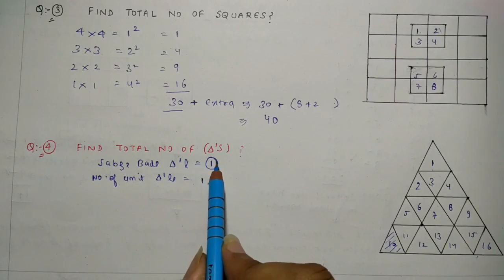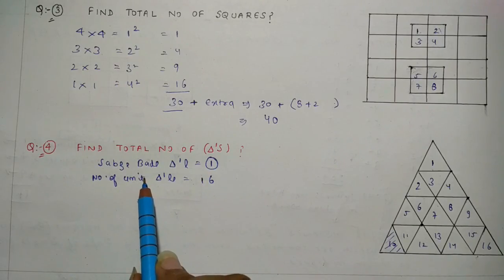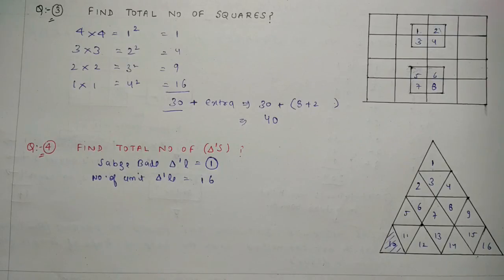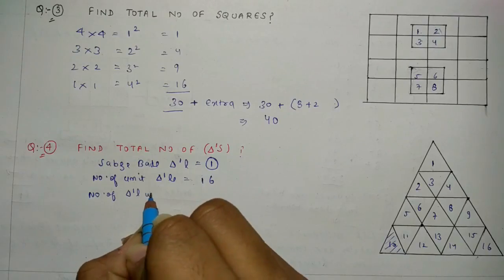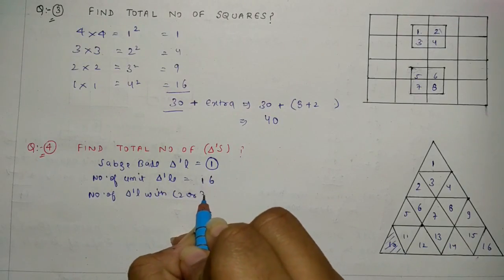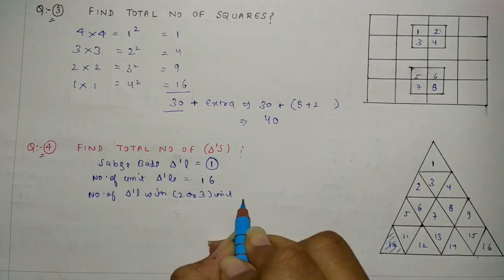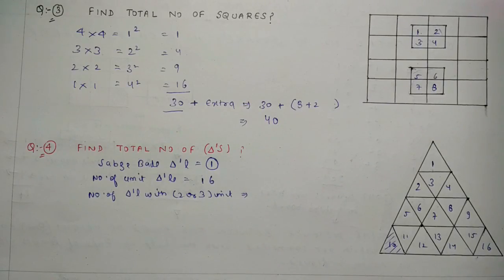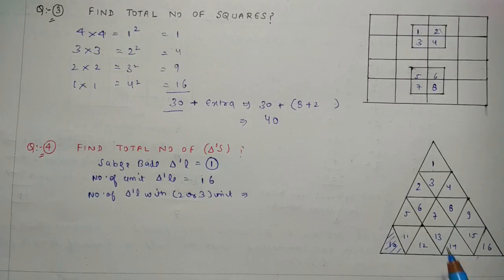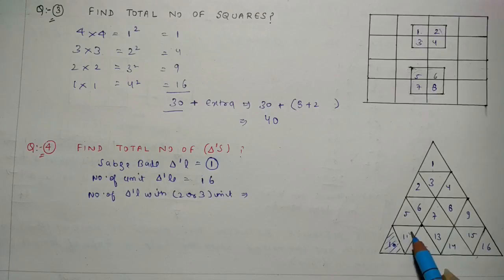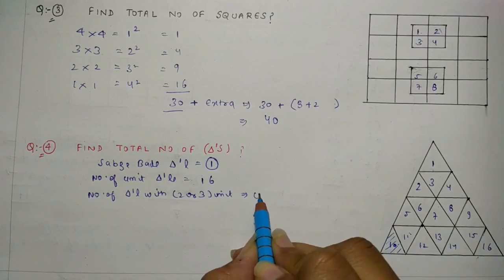Yahan par maine sabse bada dekh liya, phir small se start kiya. Ab order badhaunga. Toh ab mujhe dekhna hai number of triangles with 2 or 3 units — matlab 2 unit ya 3 unit triangles ko mila ke koi triangle form ho raha hai? Koi bhi combination lo — kissi bhi 2 ya 3 triangles ko mila kar ek bhi triangle ka pattern nahi bana paenge — toh yeh 0 ho jayega.